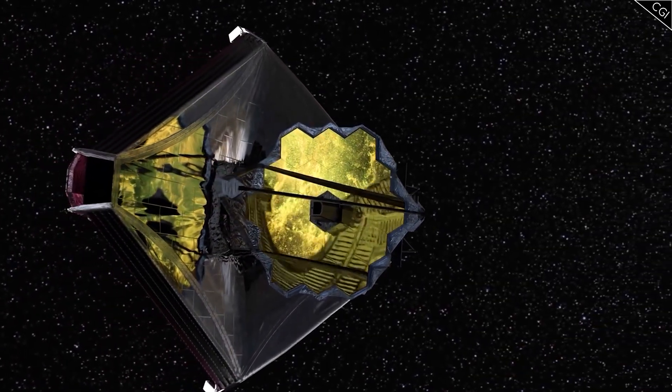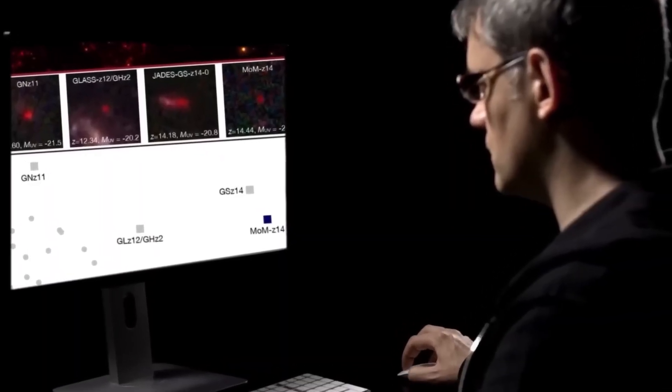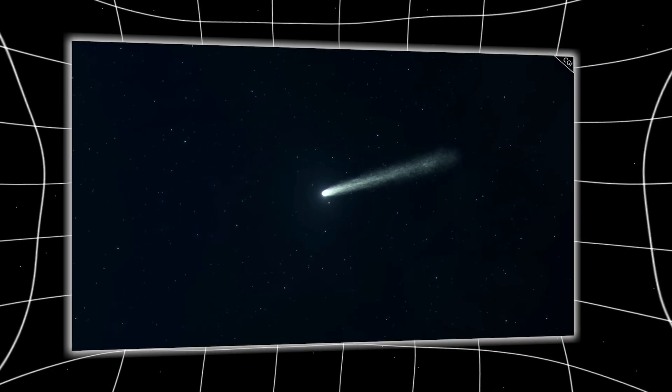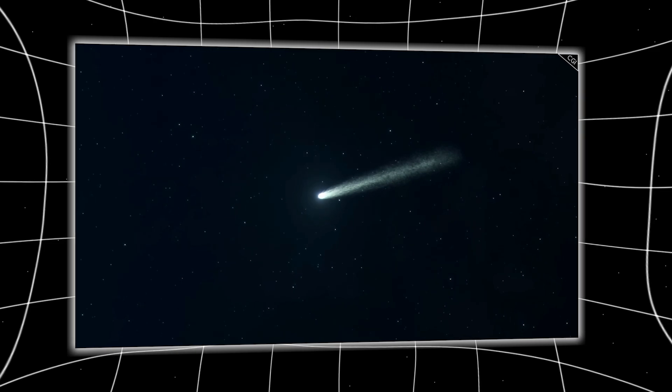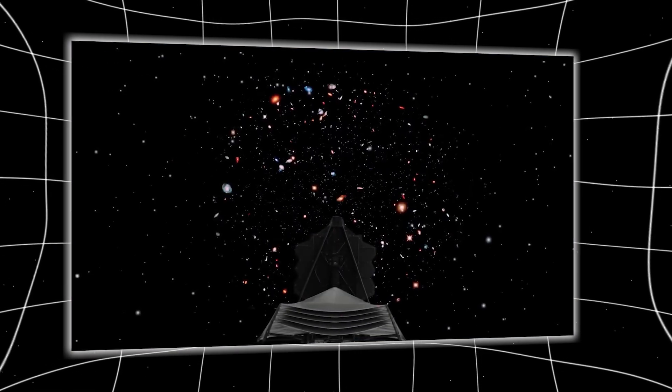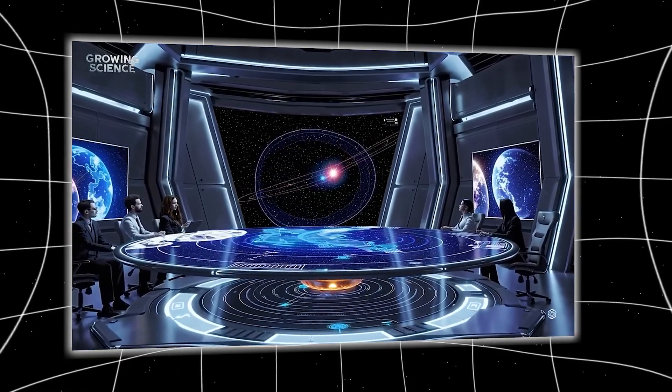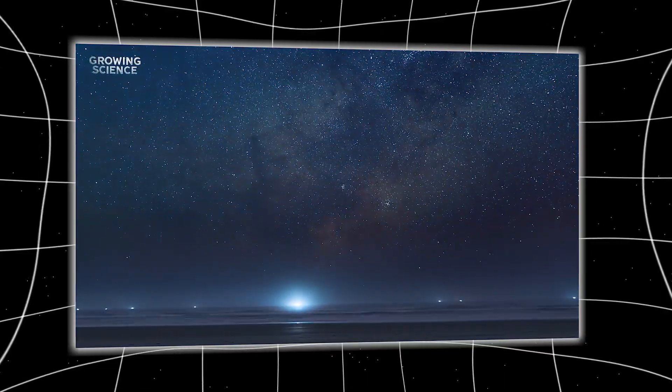From its vantage point beyond the Moon, Webb's instruments detected an object reflecting far more light than expected, given its estimated size. If it were made of rock or ice, it would have to be massive to shine that brightly. But it wasn't massive. It was relatively small, meaning its surface was unnaturally reflective. Like polished metal.